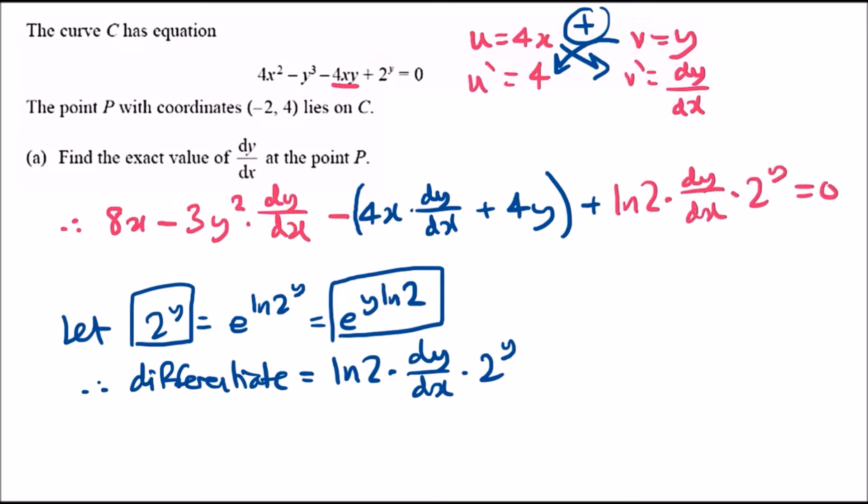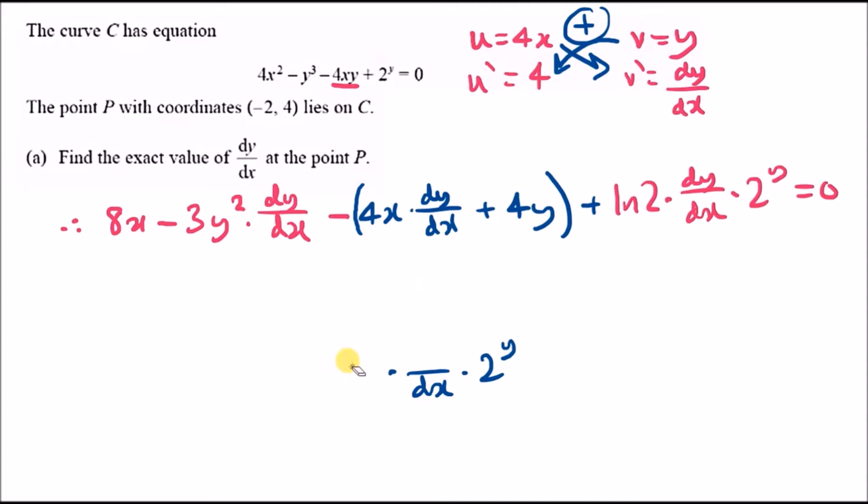The question tells us we need to find the exact value when x and y are those values, so technically we need to make dy/dx the subject. Before that, let's collect terms to make it easier. Collect all the dy/dx terms: -3y² - 4x + 2^y log 2, then rearrange the rest: 8x - 4y = 0.